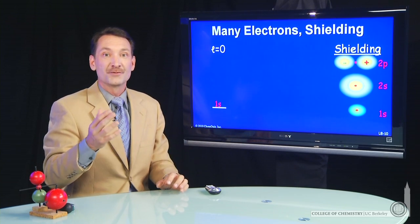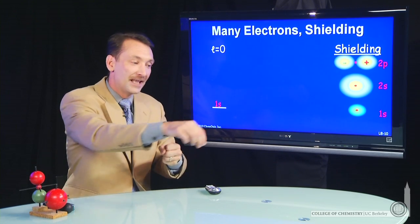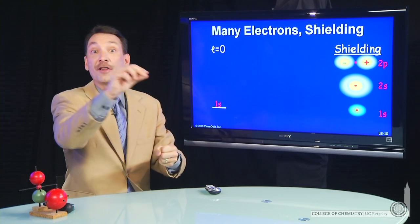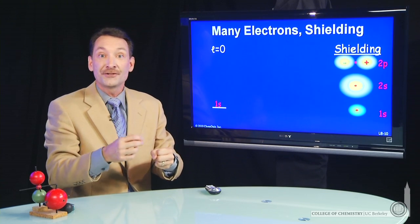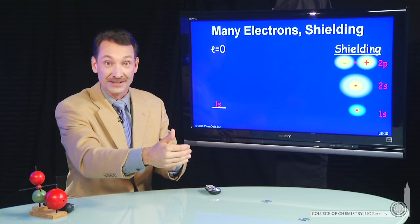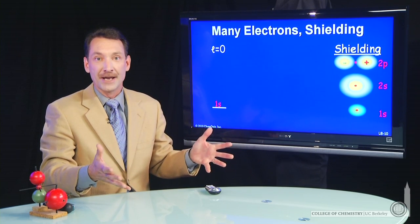So what we do is we take the one nucleus, one electron problem, and we say, let that one electron define all the orbitals. And then when we start putting more electrons in, they'll serve as just a slight perturbation to that one electron system. It's easier than solving all the mathematics over again.